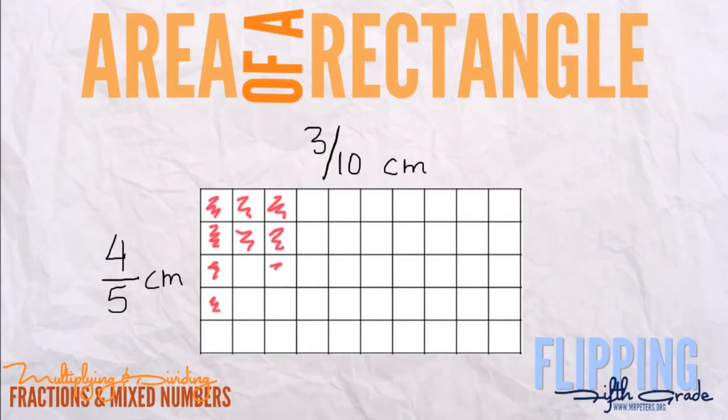One, two, three, four. So now when we multiply these two numbers, we get 50. So 50 will be our denominator. Basically, what that's doing is it's telling us how many squares there are total.